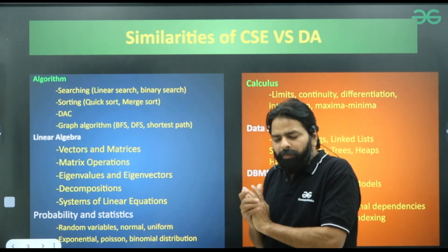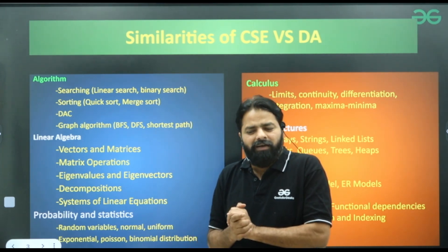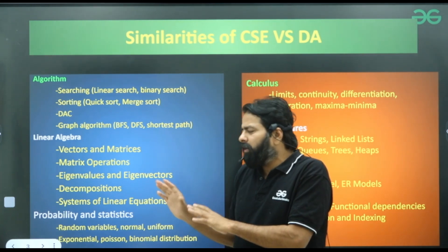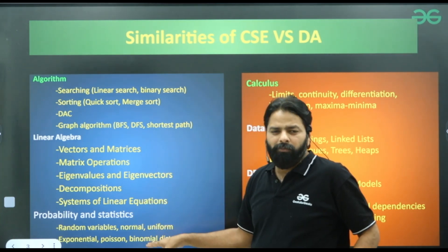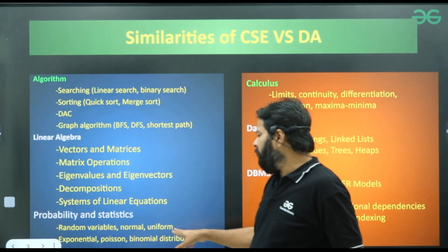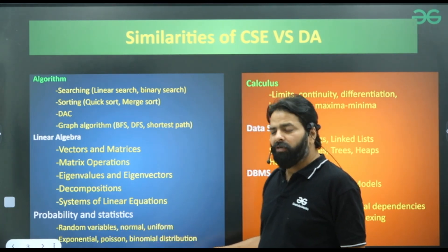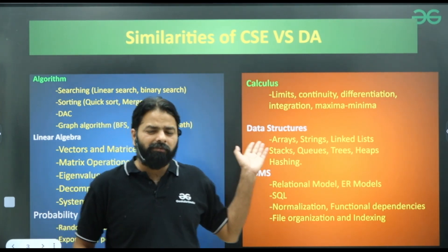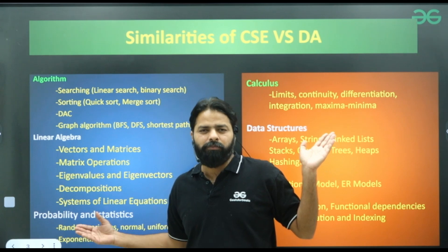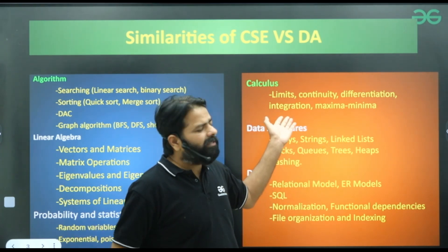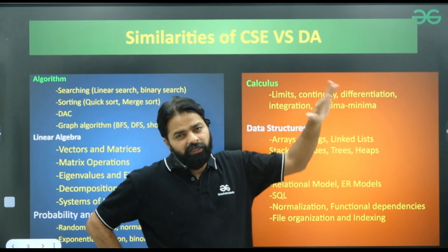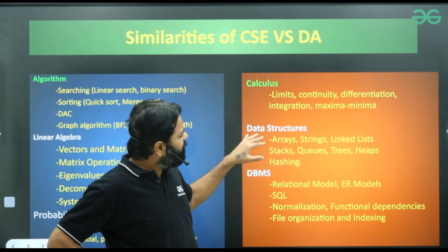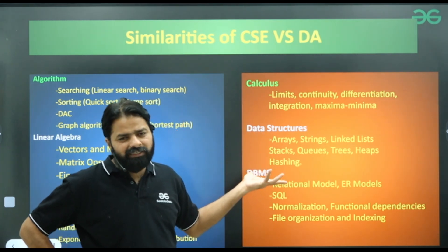When preparing for both CS and DA, if you prepare for data science you get maximum coverage of CS especially for linear algebra and probability. Probability covers random variables, normal, uniform, exponential, Poisson, and binomial distributions — all present in both DA and CS, but DA has more syllabus in probability and statistics. Calculus has limited syllabus in CS covering limits, continuity, differentiation, integration, and maxima/minima, and this is also there in data science.